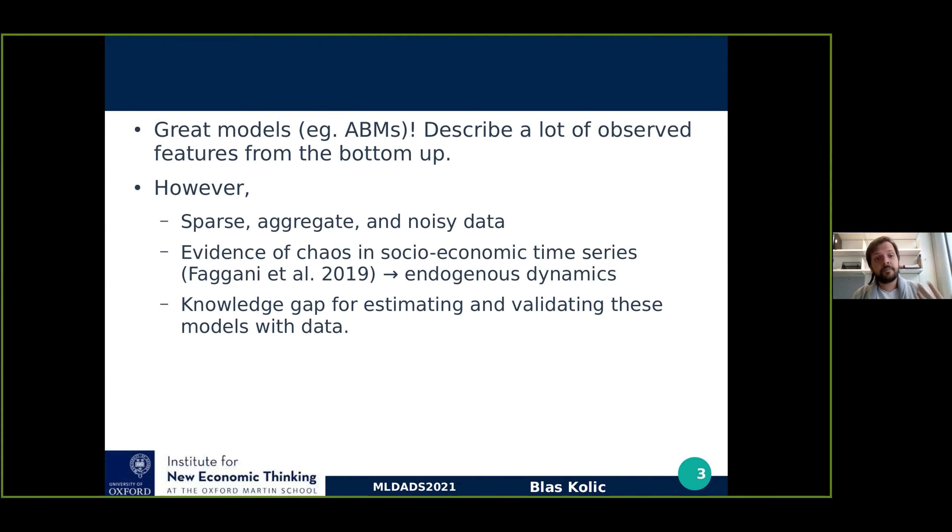However, the data that is available is many times only available in aggregation for noisy data that is very sparse. In the socioeconomic realm, there has been evidence of chaos in socioeconomic time series, which also gives us the idea that there are interesting endogenous dynamics going on. I feel there's a knowledge gap for estimating these microstates and validating these models with the aggregate data that's available. So what I wanted to answer today and tackle is how can we infer the latent microstates of a model from aggregate data?